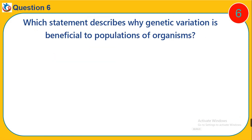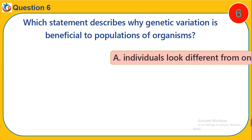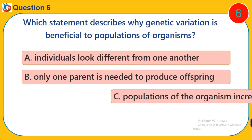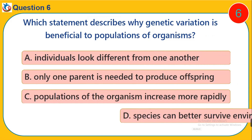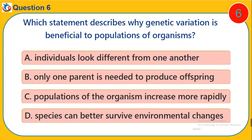Question 6. Which statement describes why genetic variation is beneficial to populations of organisms? A. Individuals look different from one another. B. Only one parent is needed to produce offspring. C. Populations of the organism increase more rapidly. D. Species can better survive environmental changes.